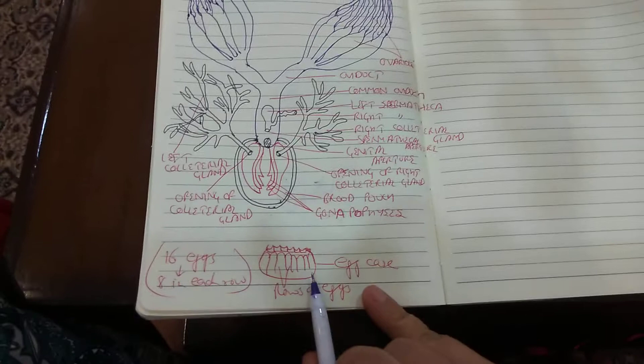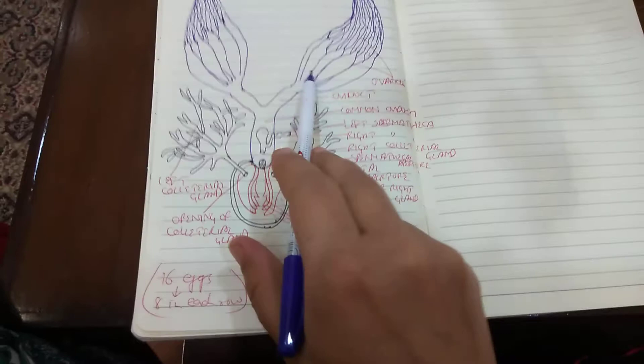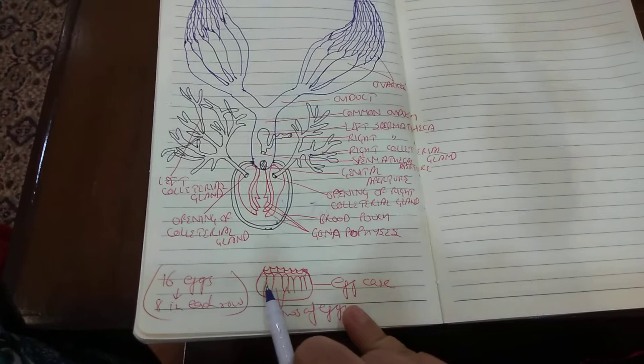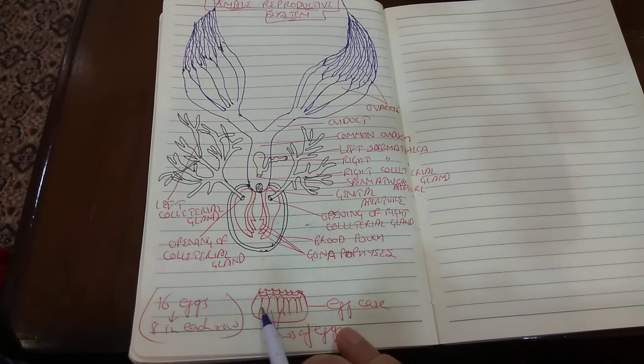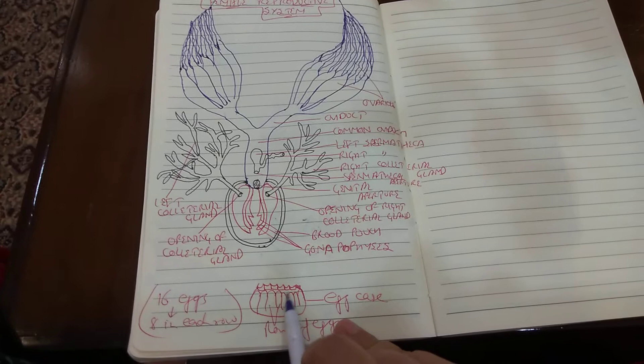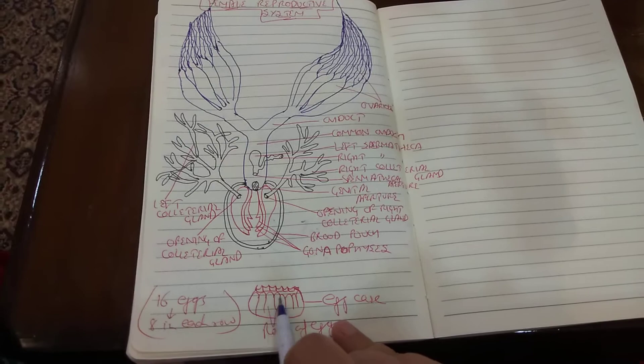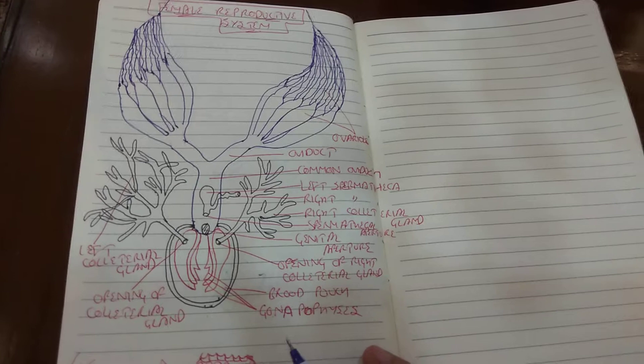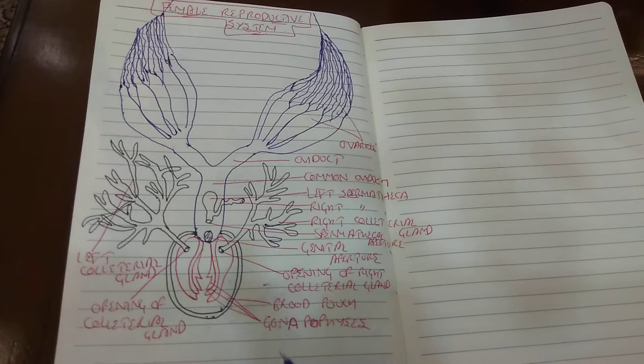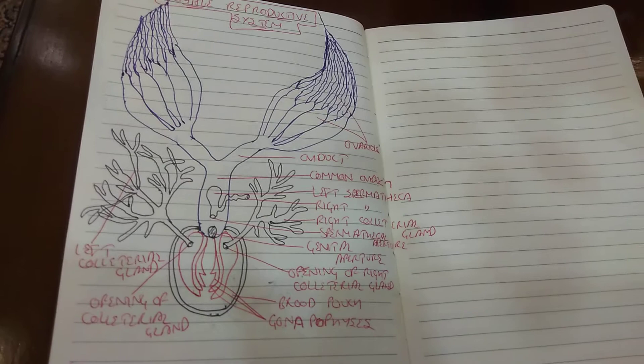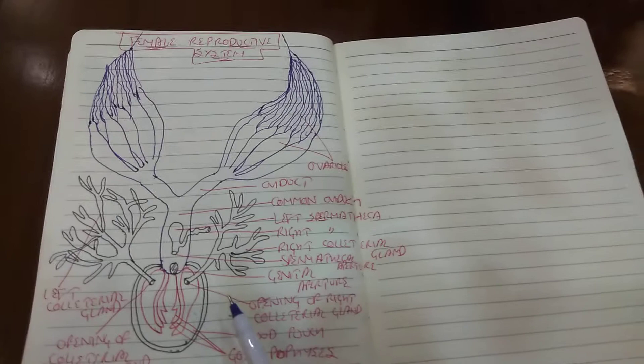The 16 eggs are released alternately from the right and left ovaries. They are arranged in two parallel rows of eight eggs each; the bulges seen on the exterior of the ootheca show the presence of eggs in rows. After copulation, 16 eggs usually mature at a time, one in each ovariole, and these mature eggs pass into the common oviduct from the left and right ovaries alternately. When they enter the genital chamber, fertilization occurs and ootheca formation takes place.